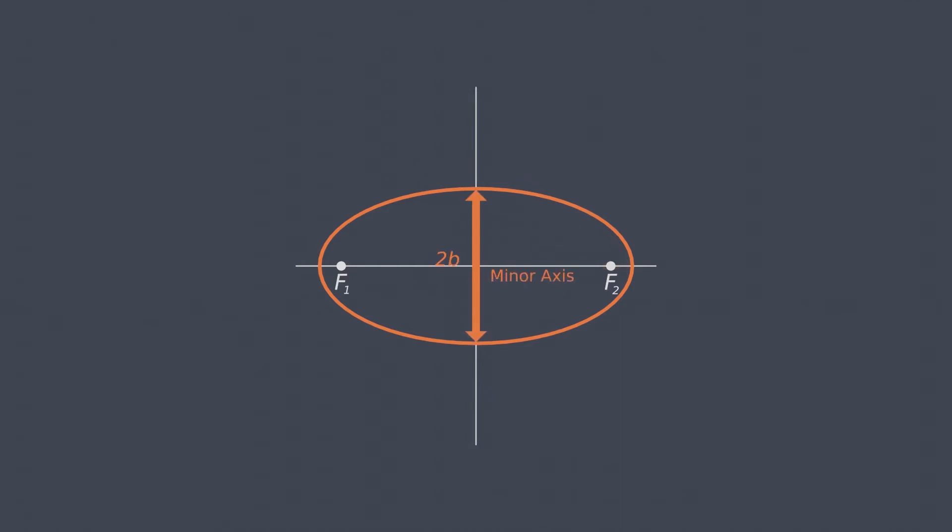A line perpendicular to it passing through the center is called the minor axis. Half of it is called semi-minor axis, denoted as b.